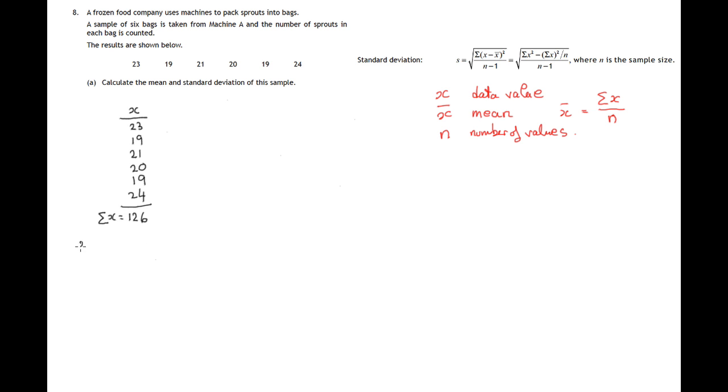And the mean is just that total, the total of these data values divided by the number of the total values, which is six in this case. So let's just put n there because that's the formula for the mean. But in this case, it's six. Now six into 126 is 21. So the mean is 126 divided by six, you get 21. So the mean value is 21.